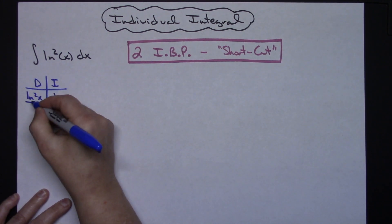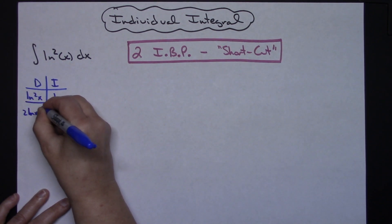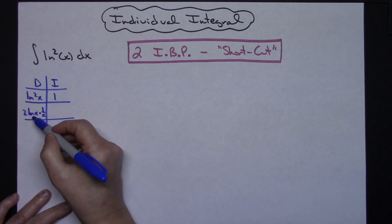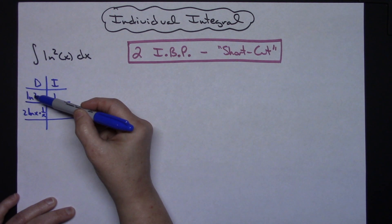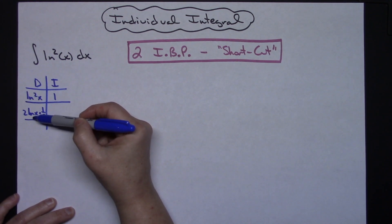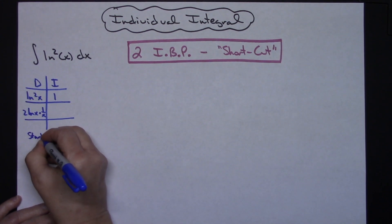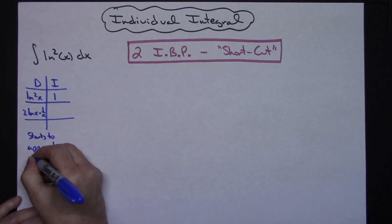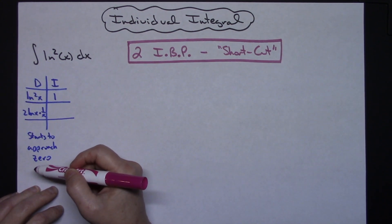On the left-hand side I'm going to take the derivative, so I'll have 2 natural log of x times 1 over x — I'm not going to worry about simplifying that. If I took the derivative again, you can see that this quantity is starting to approach 0, so let's just note that it starts to approach 0. In the shortcut, that tells me I'm done and I don't have to keep taking the derivative.